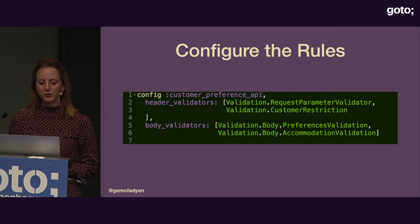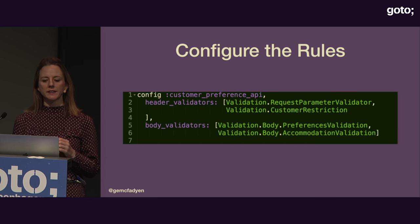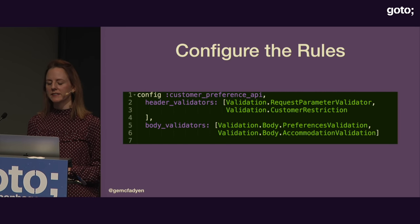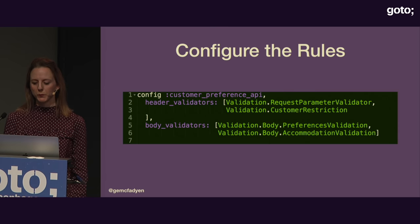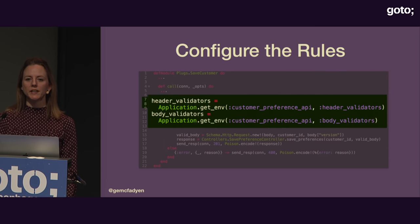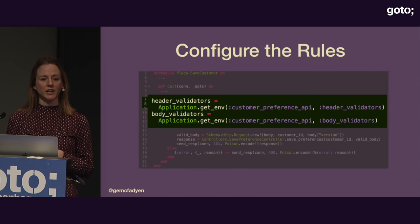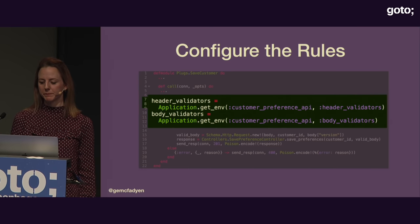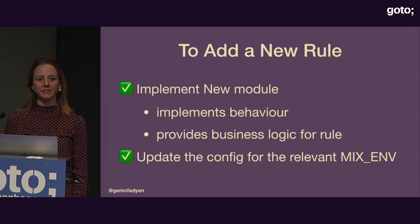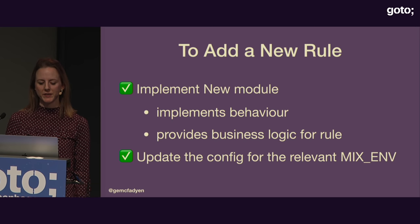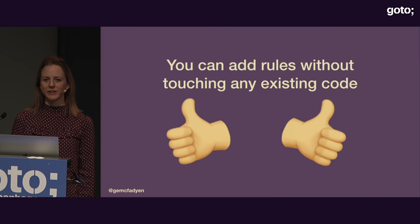The last step to make this fully configurable is to move the list of modules from the code into the config files. In Elixir you have a different config file for every environment — in our test config we provide just a couple of rules, and in production we provide them all. At runtime, we look up in our config what set of rules should be injected. This gives the flexibility of using a couple of rules when running unit tests, and all rules when running the real system. Now to add a new rule: add a new module with the new business logic, configure that module name in the relevant config file, and that's all. We've managed to add new rules without touching any existing source code — we're adhering to the Open-Closed Principle.